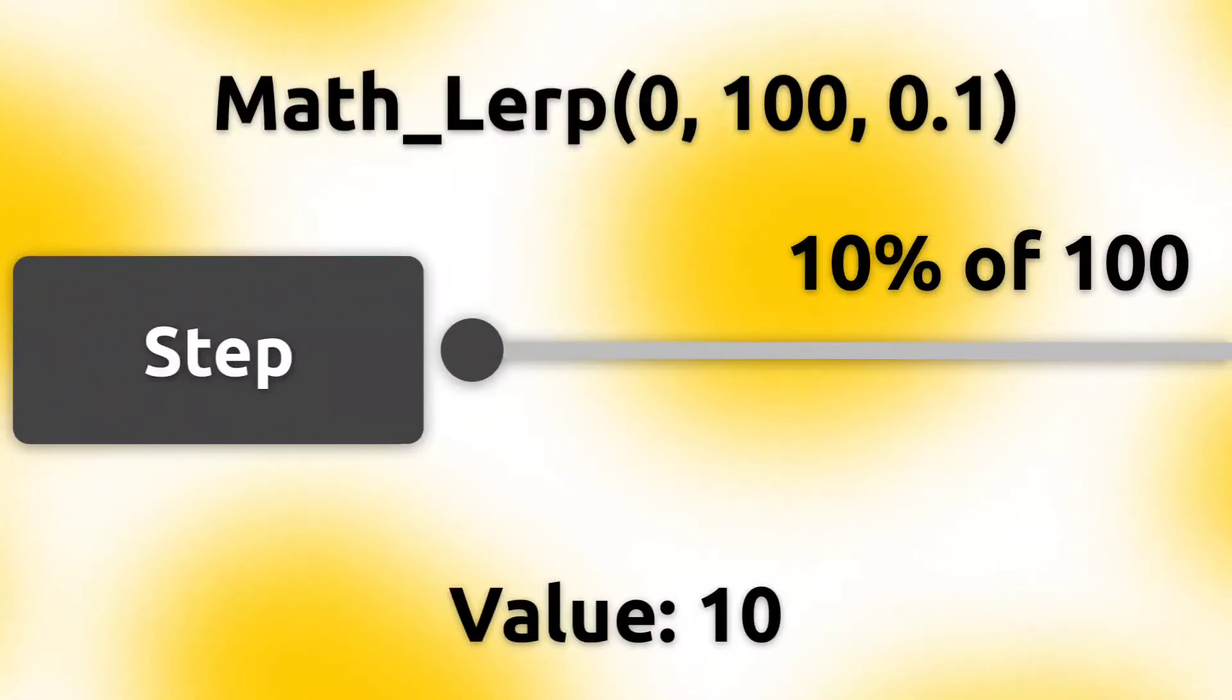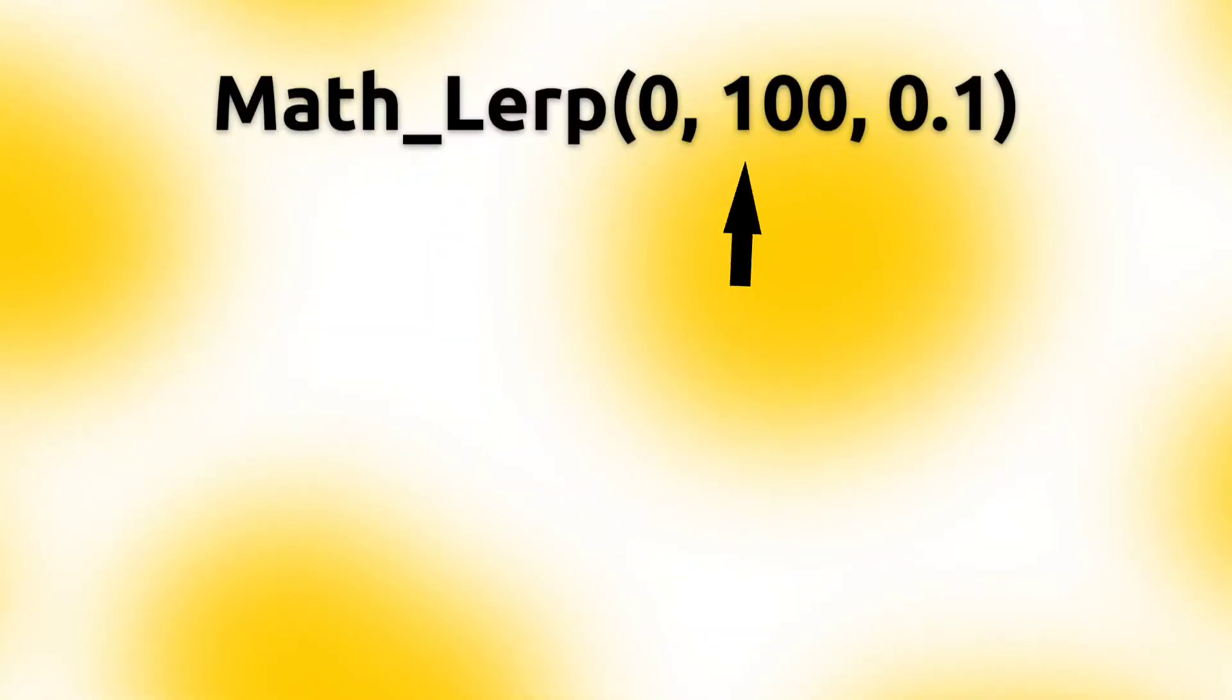But you see, the value started at 0, ends with 100 but stays at 10. That's because 10% of 100 is 10.